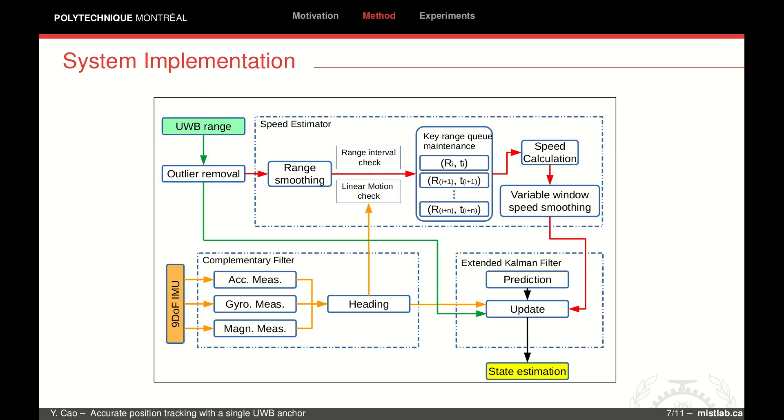We design a system that uses this speed estimation to update the system. An important task is to distinguish the constant velocity motion period to filter out inadmissible values. Since the gyroscope can reflect the heading status, we relax the conditions to linear motion detection.